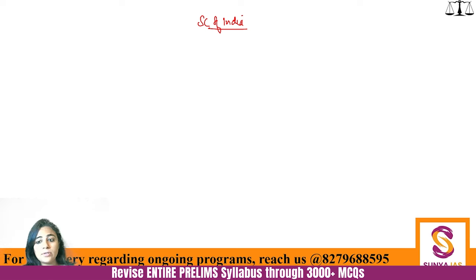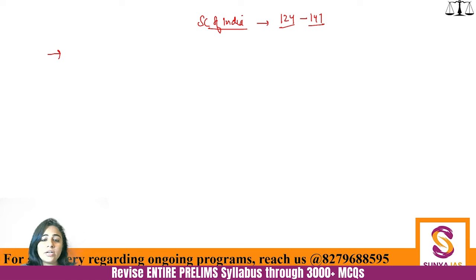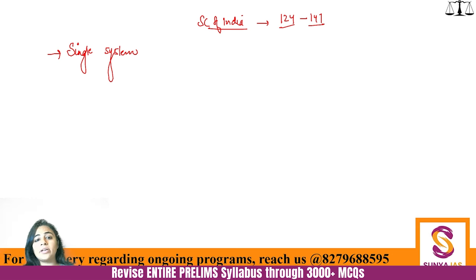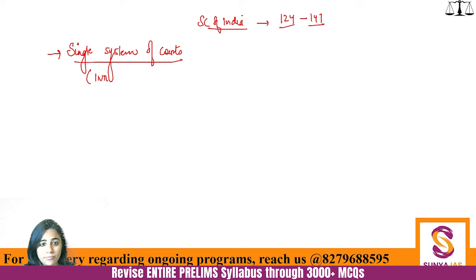You make the notes on A4 size sheets — loose A4 size sheets, not bounded, so that you can arrange them according to your convenience. Now, the Supreme Court of India — many people think that it is only Article 124 which establishes the Supreme Court of India. Article 124 does talk about that, but there are a plethora of articles from 124 to 147 that talk about various powers, jurisdictions, and judges of the Supreme Court.